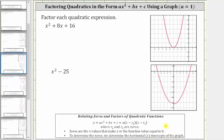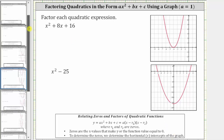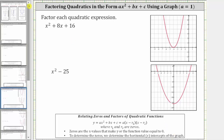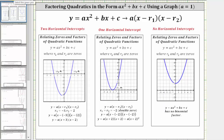Just remember, when graphing a quadratic function on the coordinate plane, the graph is a parabola, and when we look for the horizontal intercepts, there are three possibilities. We can have two horizontal intercepts, as we see here, and therefore we can have two zeros, giving us two binomial factors.